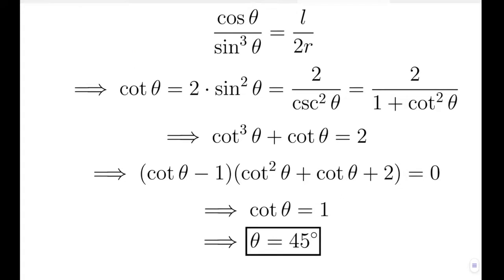Now solving this more, what we get is cot of theta equals to 2 sin square theta. Here I have substituted L equals to 40 cm and R equals to 10 cm. Sin square theta can be written as 1 by cosec square theta.